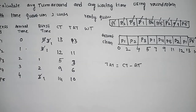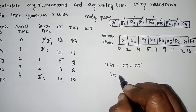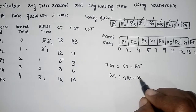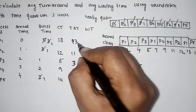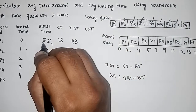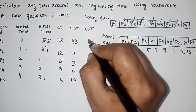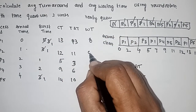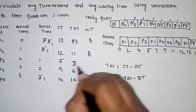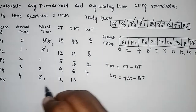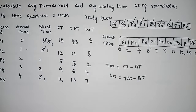Here are the turnaround times. Next, waiting time calculation: waiting time equals turnaround time minus burst time. Turnaround time for P1 is 13; 13 minus burst time 5 equals 8. P2: 11 minus 3 equals 8. P3: 3 minus 1 equals 2. P4: 6 minus 2 equals 4. P5: 10 minus 3 equals 7. Waiting times are: 8, 8, 2, 4, 7.